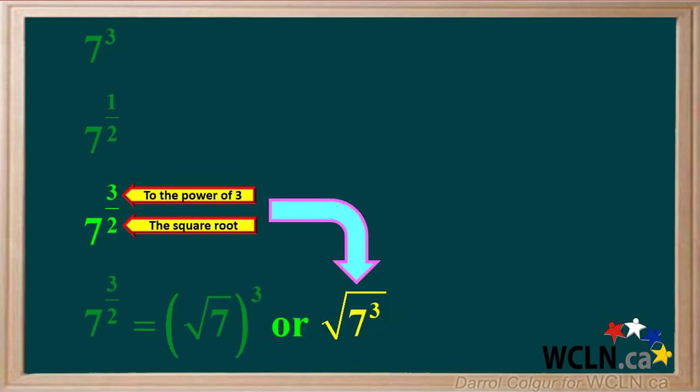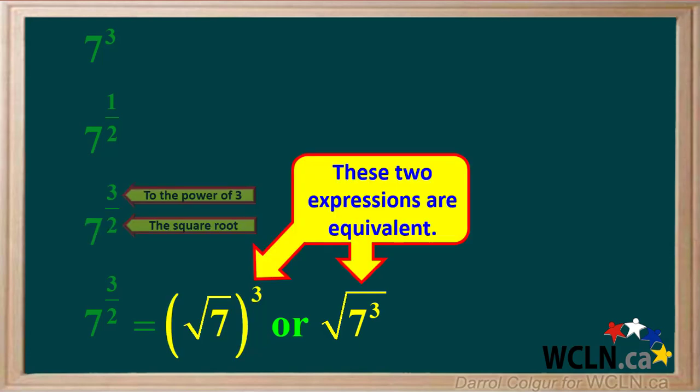Since 7 is raised to the power of 3 and the square root is taken, we can also write the expression as the square root of 7 cubed. Be aware that writing the expression either of these two ways is equivalent — they both mean the same thing and they're both correct answers. In both of them, the power is 3 and the square root is taken. Pause the video and make sure this makes sense to you.